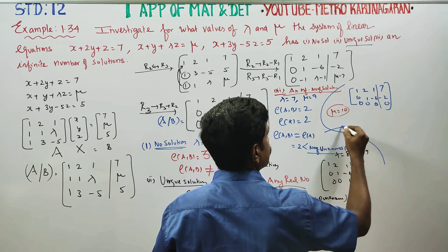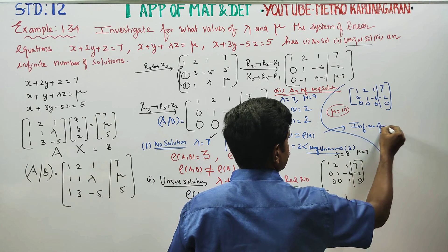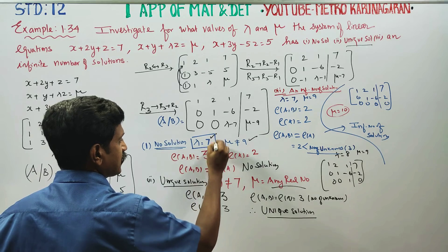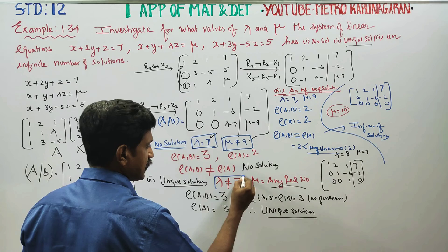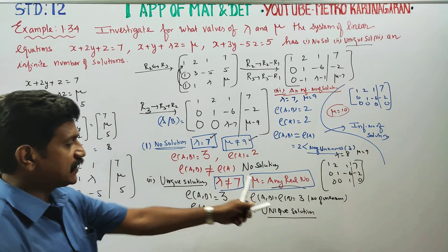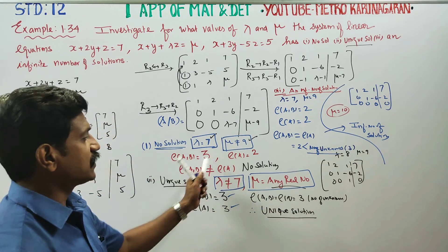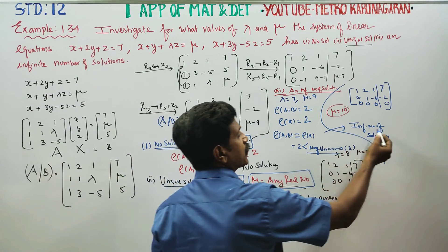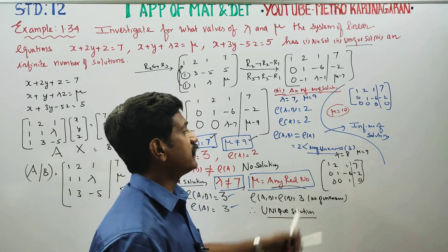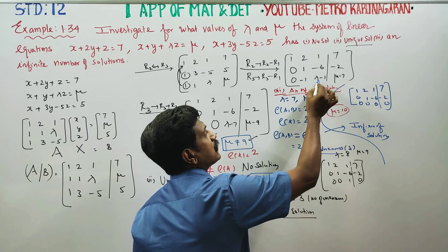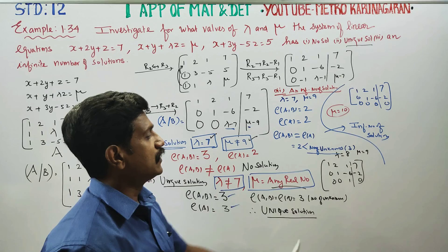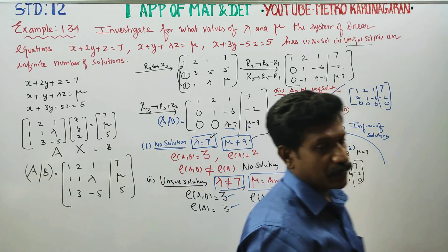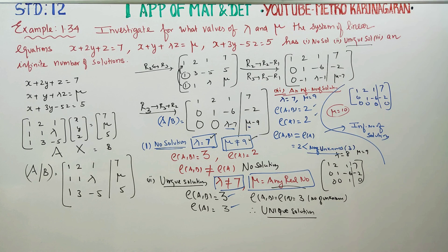In summary: the first case gives no solution when lambda equals 7 and mu is not equal to 9. The second case gives a unique solution when lambda is not equal to 7 and mu is any real number. The third case gives infinitely many solutions when lambda equals 7 and mu equals 9. These are the three cases for the values of lambda and mu.